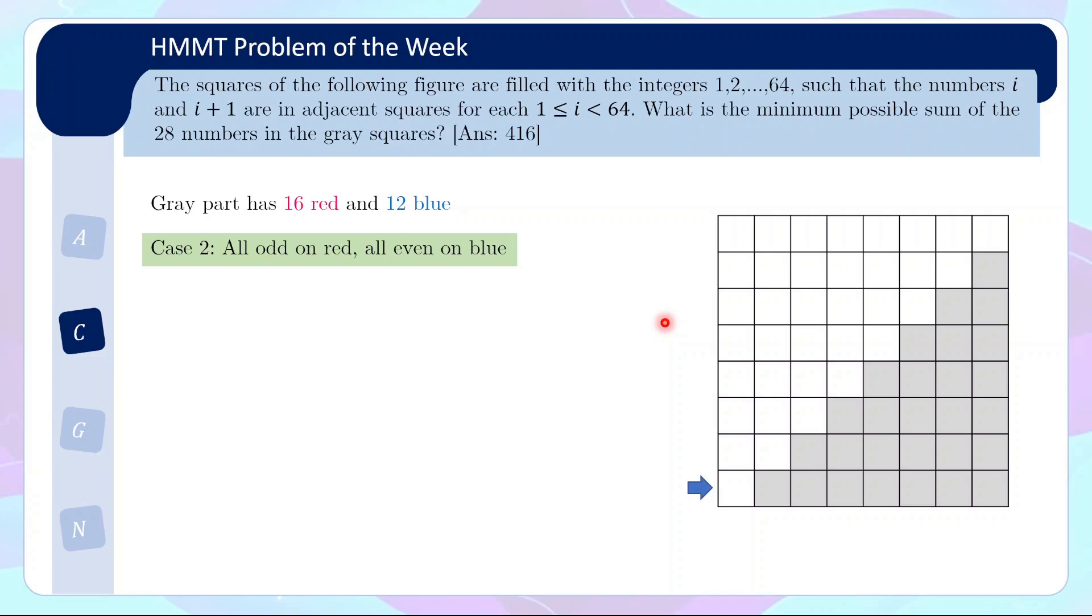Now case 2 is where things get interesting. Actually, there are a number of sets that can give you a sum smaller than 416. The smallest possible sum you can get is again taking 1 to 24, and then the remaining 4 red squares are the next 4 odd numbers, which are 25, 27, 29, 31. This gives you a sum of 412.